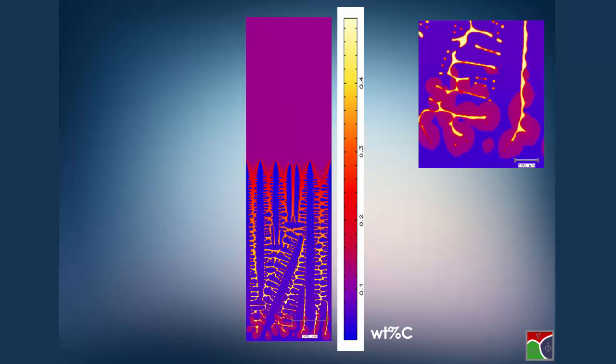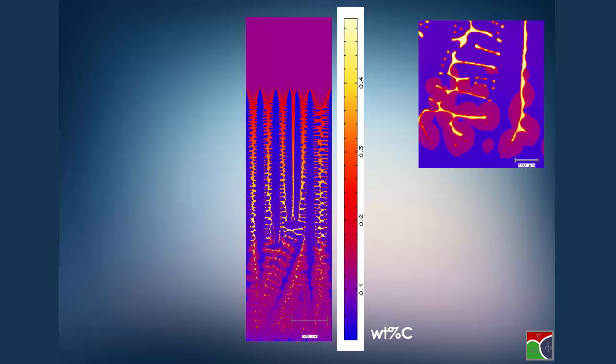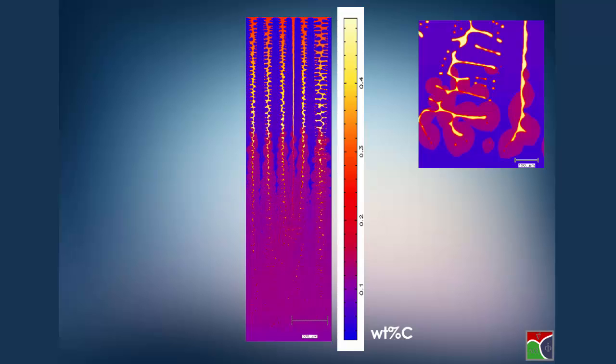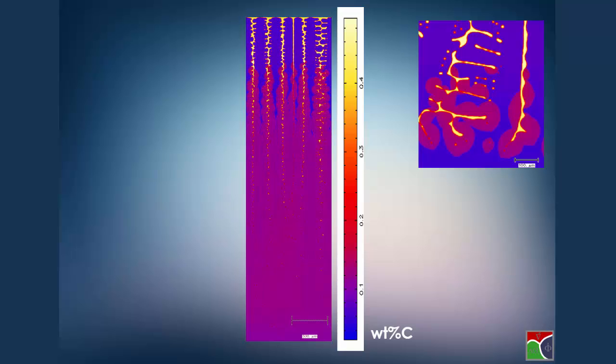If we continue this animation, we will end up with a very homogeneous carbon distribution due to this fast diffusion of carbon. The scale bar here will swap to another color in order to visualize the differences at all at the very end.